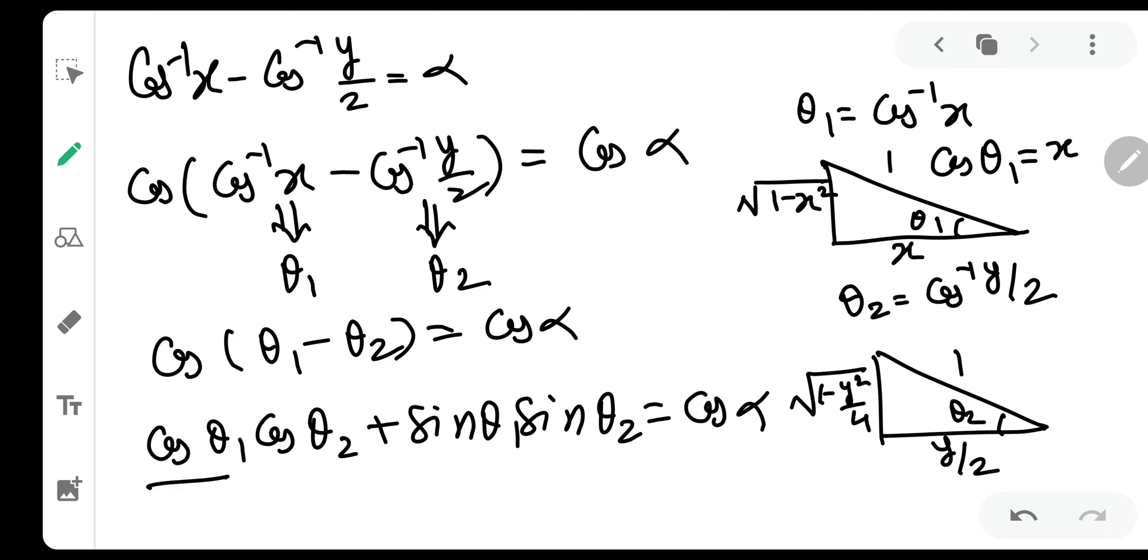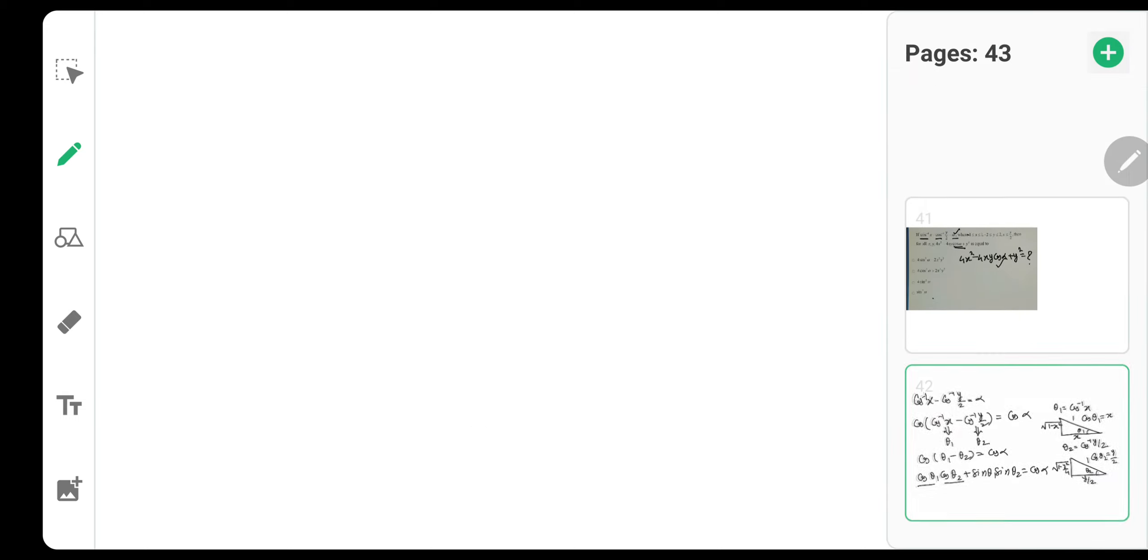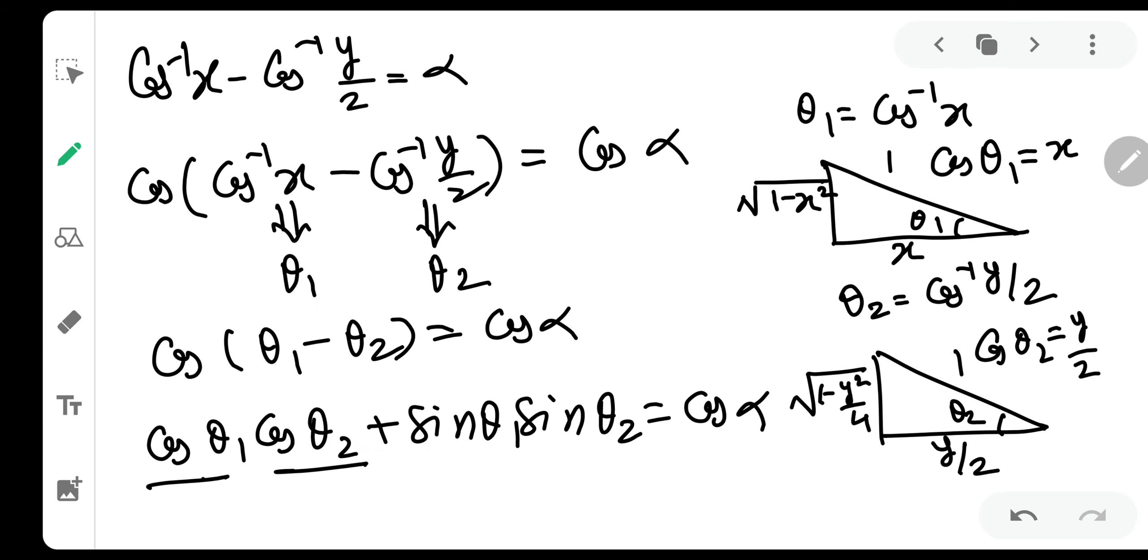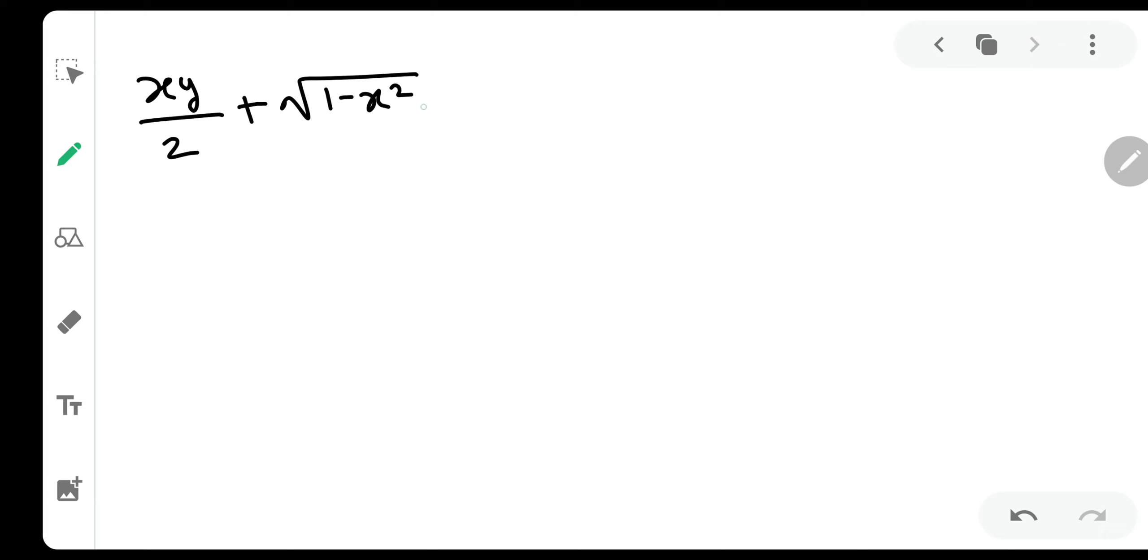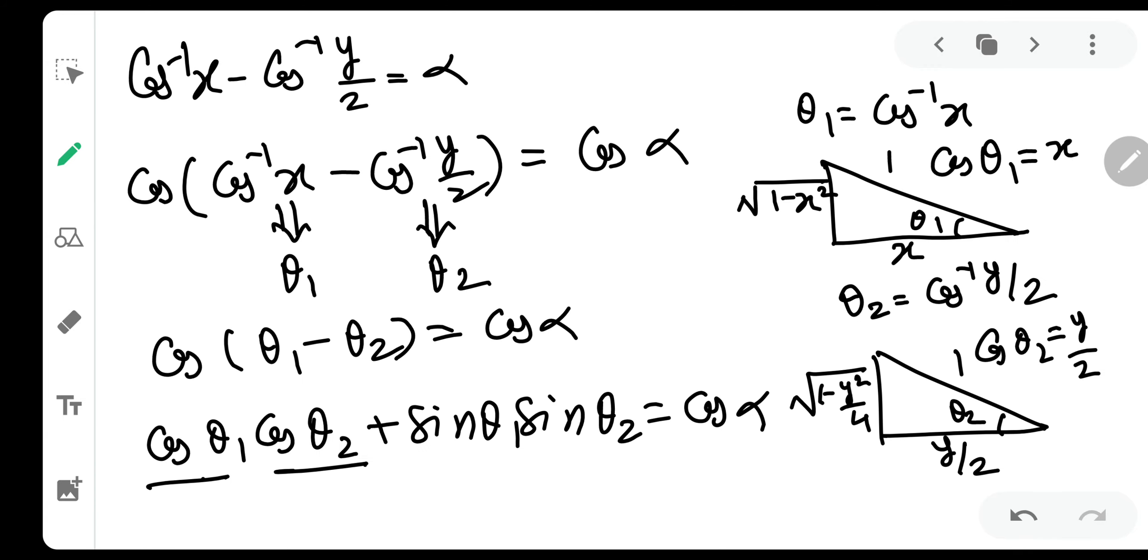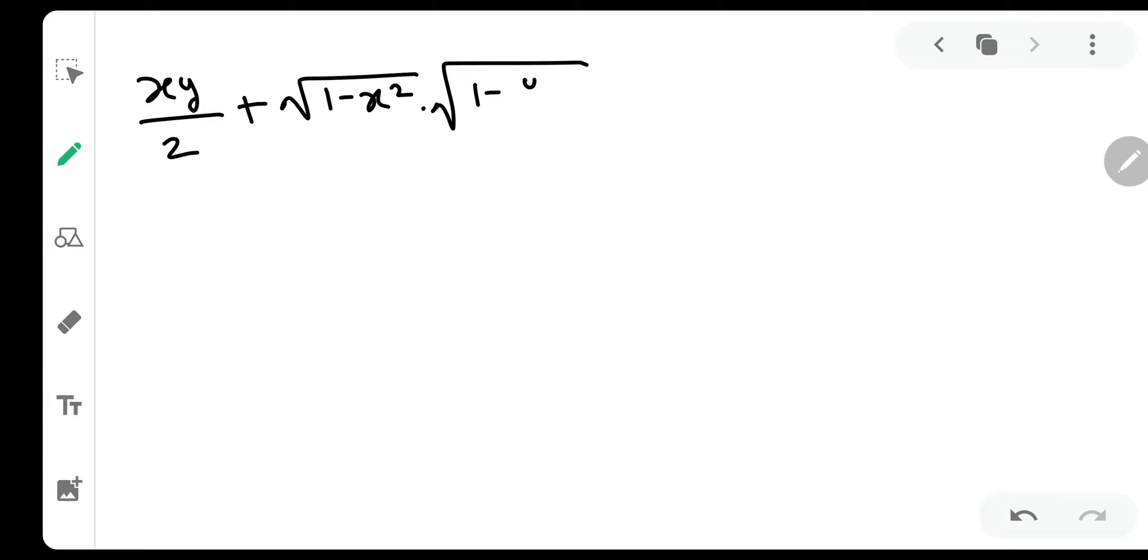Now, what is cos theta 1? Cos theta 1, as you can say, is x. And what is cos theta 2? It is y by 2. As you can see over here, it is just y by 2. So x into y by 2 is our initial expression. Now, let us see what is sin theta 1 opposite by hypotenuse. So under root 1 minus x square by 1 it will be. So plus under root 1 minus x square by 1. And then what is sin theta 2? Sin theta 2 again is opposite by hypotenuse. Under root 1 minus y square by 4. So this will be under root 1 minus y square by 4 is equal to cosine alpha.